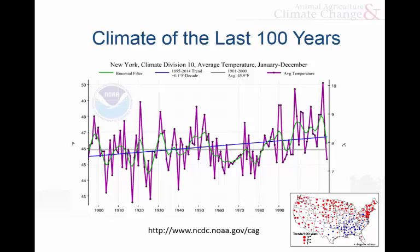If you look at the same graph for Georgia, you'd actually see the slope going down. In other words, in Georgia over the last 100 years, it's getting colder. If a positive slope upward is identified by a red dot, a slope going down would be identified by a blue dot. You can see in the southeast, we have a lot of blue dots — we've actually gotten colder over the last 100 years.